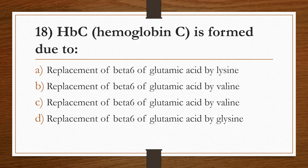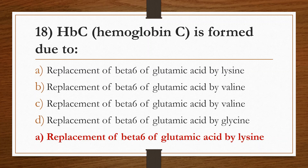Eighteenth question: Hemoglobin C is formed due to Option A: replacement of beta-6 glutamic acid by lysine. Option B: replacement of glutamic acid by valine. Option C: replacement of beta-6 glutamic acid by valine. Option D: replacement of beta-6 glutamic acid by lysine. Answer is Option A: replacement of beta-6 glutamic acid by lysine.